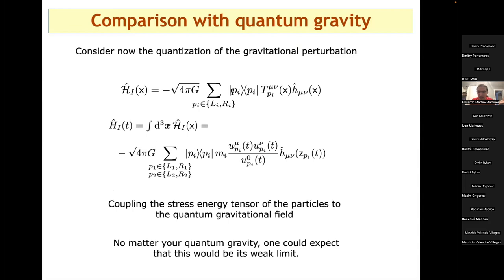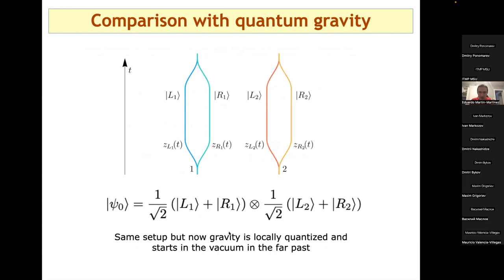We put hats on the h's. The Hamiltonian density couples the masses with the quantum field operator h_μν(x) — one degree of freedom per point in space — to the stress-energy density of the masses. Integrating over spatial sections with a canonical foliation in flat spacetime gives the full Hamiltonian. This is a full QFT description of the BMV experiment with locally quantized gravity.